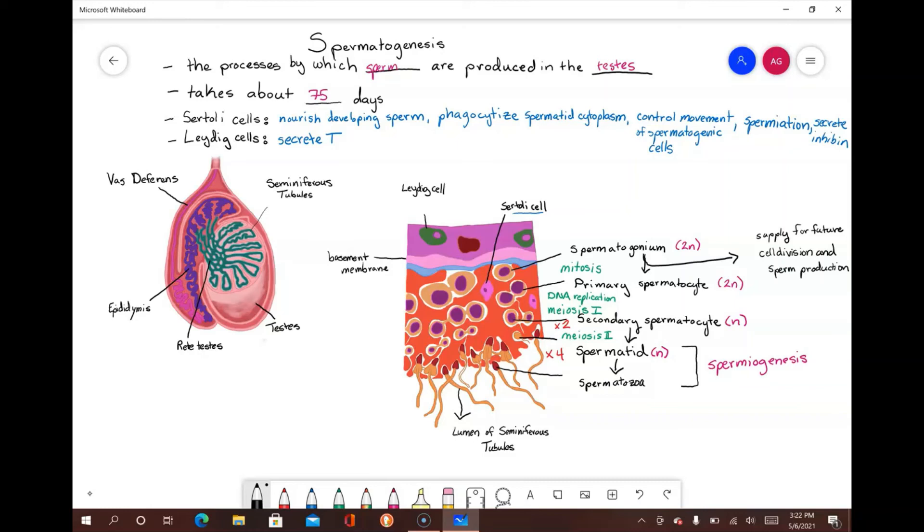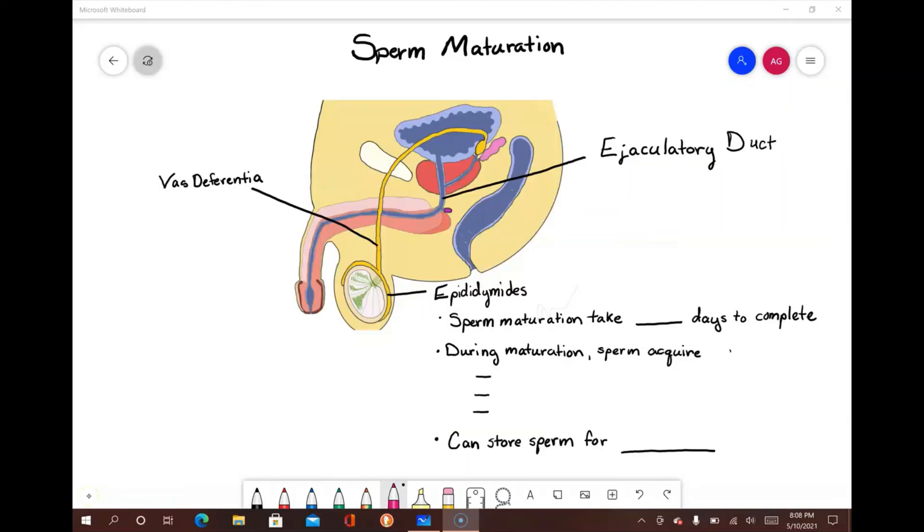Since sperm cannot swim at this stage, even though they have their flagella, secretions from Sertoli cells and peristaltic contractions push sperm into a network of ducts known as the rete testis, and then into the epididymis. The next process to discuss will be the process of sperm maturation, storage, and transport of sperm through the male duct system to contribute to semen formation.